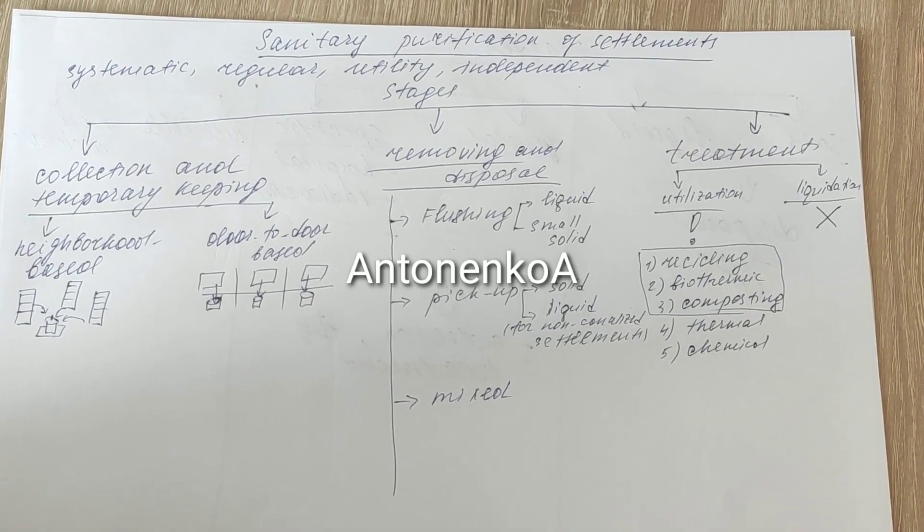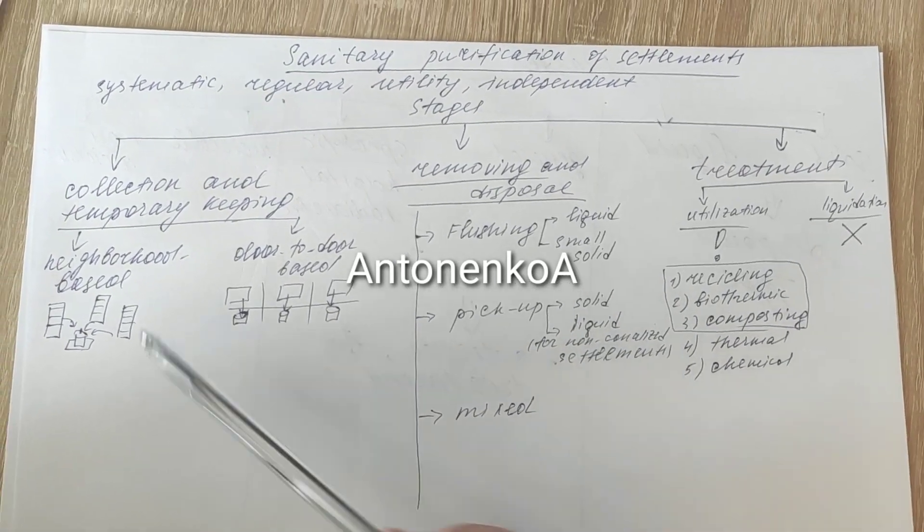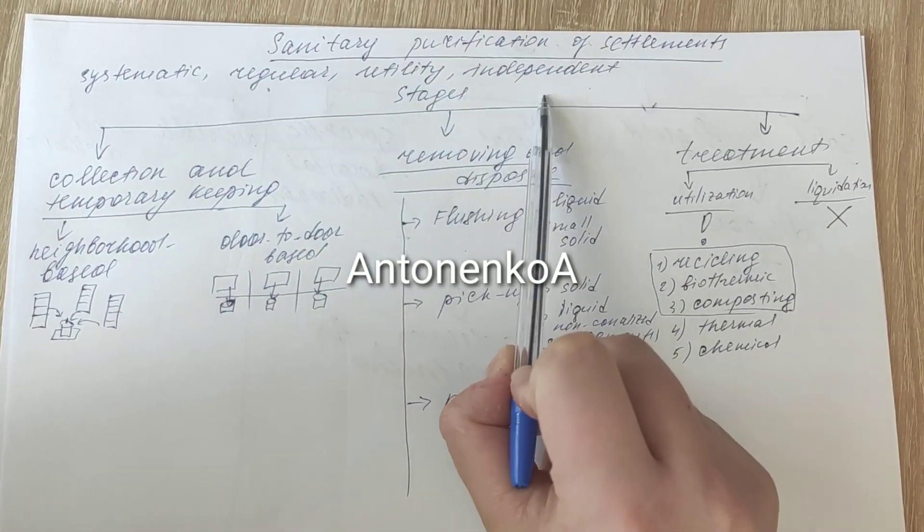All the system of waste management is called sanitary purification of settlement. This system should have measures that are systematic, regular, utility and independent.